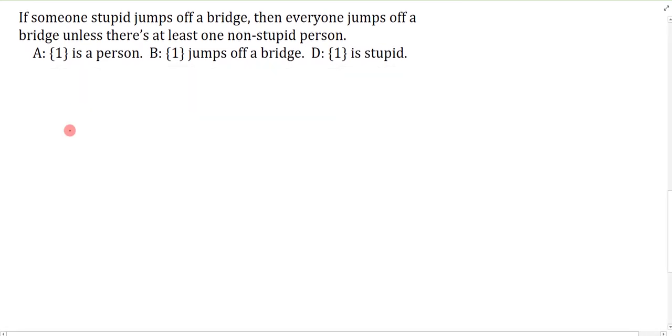Here's the last example. If someone stupid jumps off a bridge then everyone jumps off a bridge unless there's at least one non-stupid person. Whenever you change the subject or introduce a new subject you need a new quantifier. I have someone stupid and that property is jumps off a bridge. I also have this if that's paired with this then. We're going to have a different subject over here because it says everyone whereas this is someone stupid. I can just ignore what's after the comma and symbolize this simple sentence.